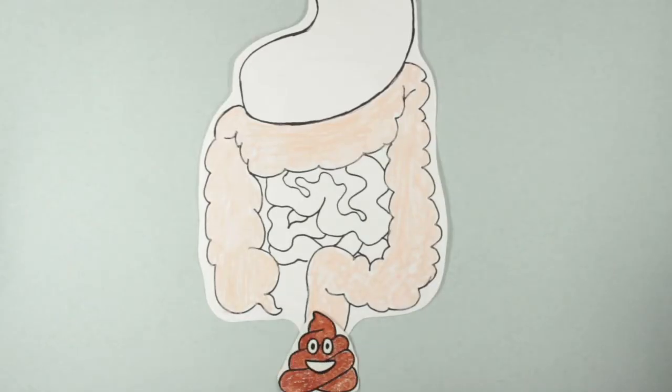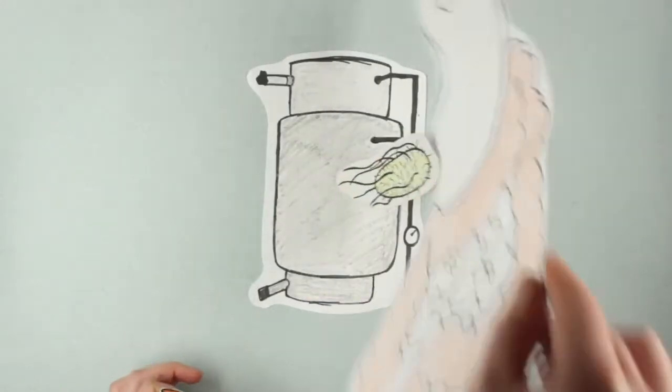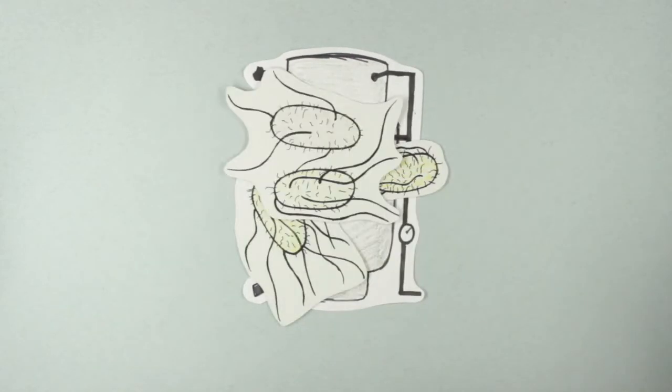Although bacteria, such as E. coli, naturally live happily in our gut, we can take them out of that environment and grow them in big bioreactors.